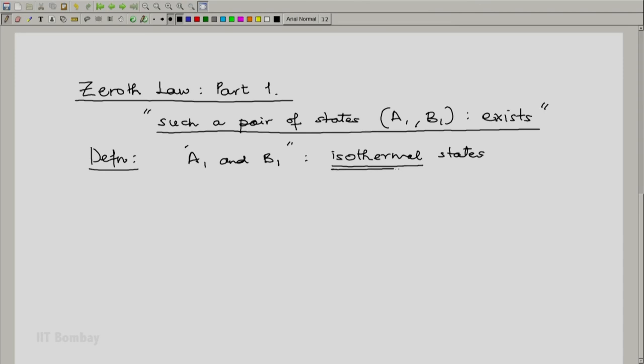So we are defining the word isothermal equilibrium. Another way of saying the same thing is A1 and B1, these are states of system A and system B, which are in thermal equilibrium.